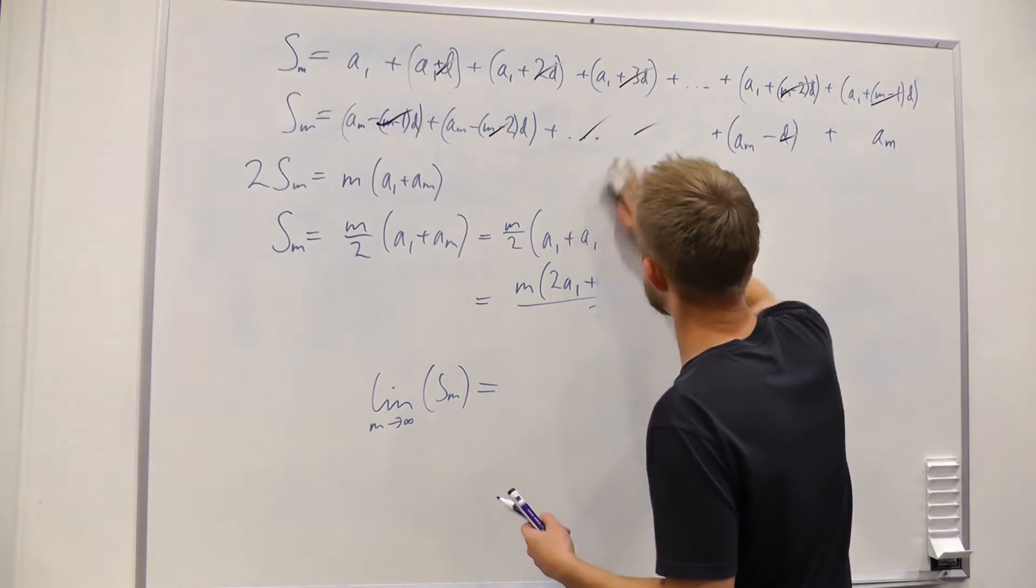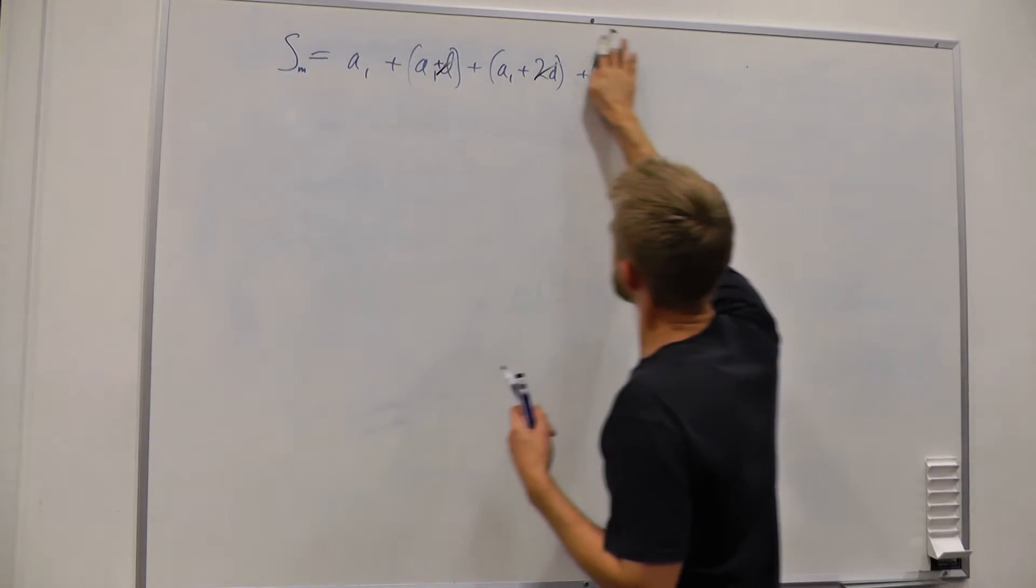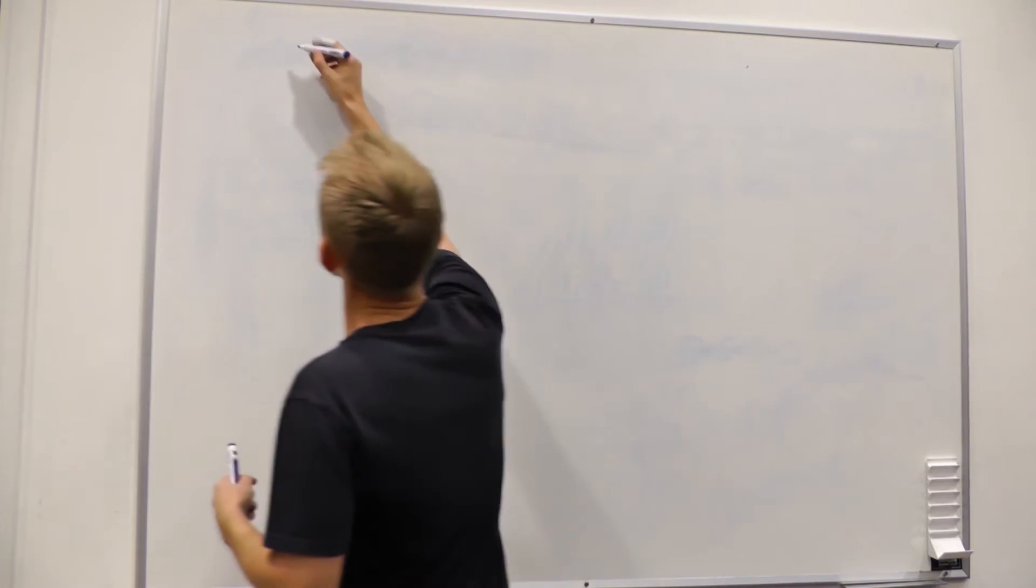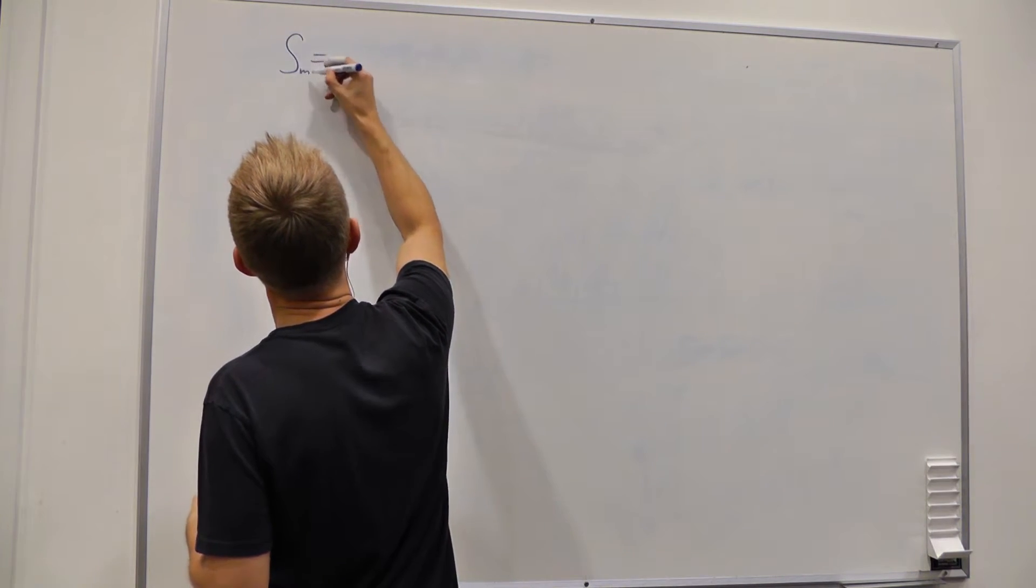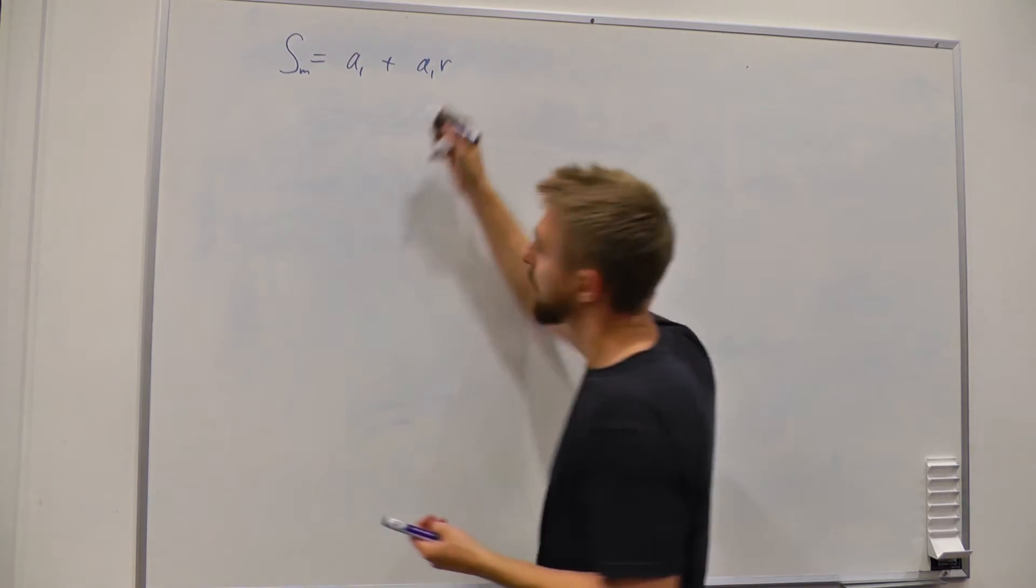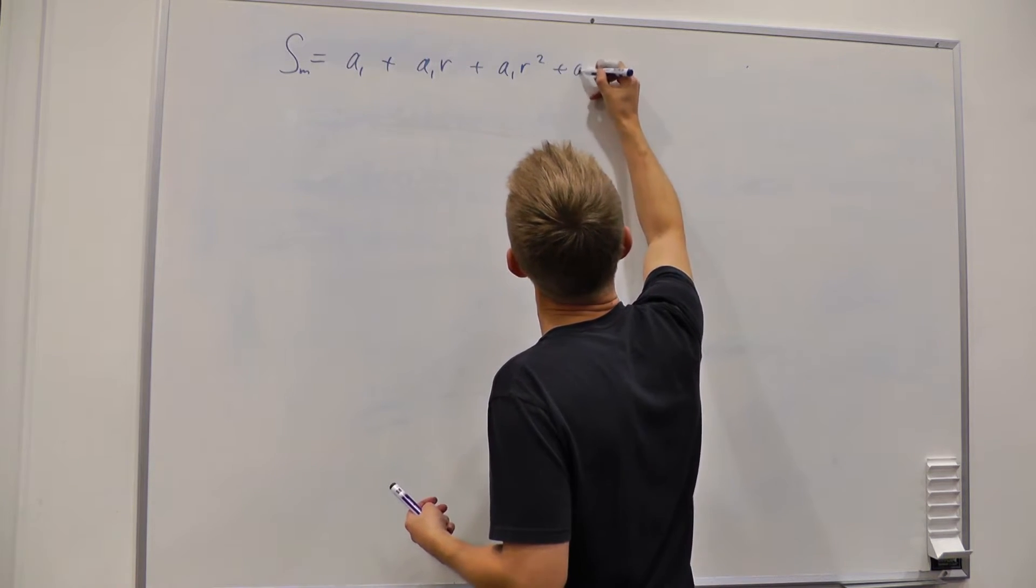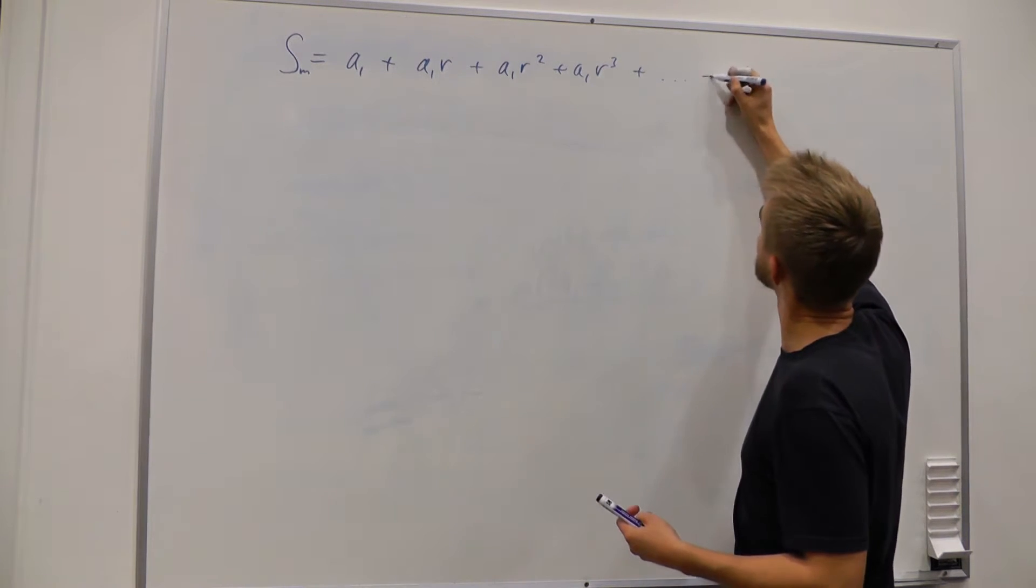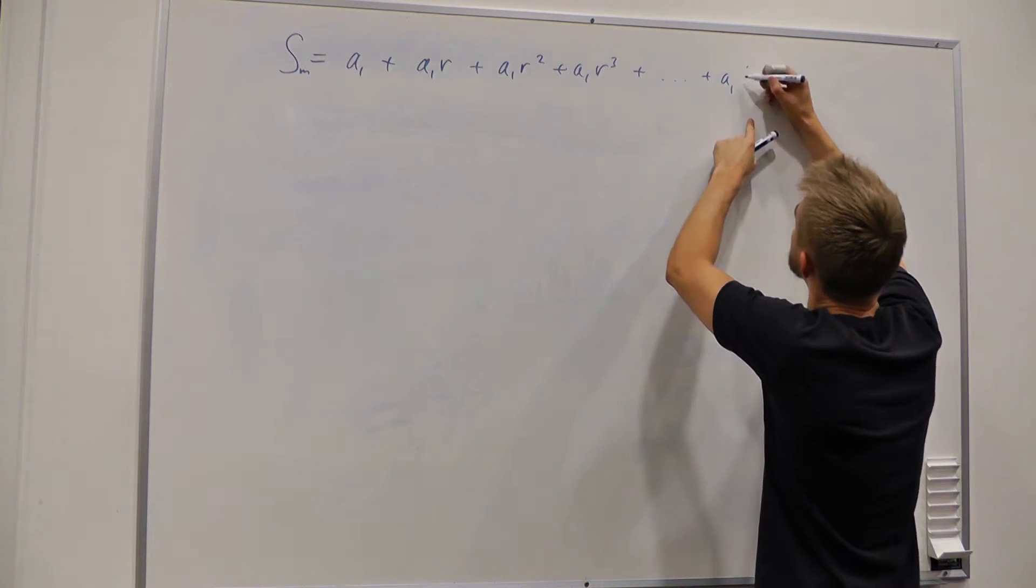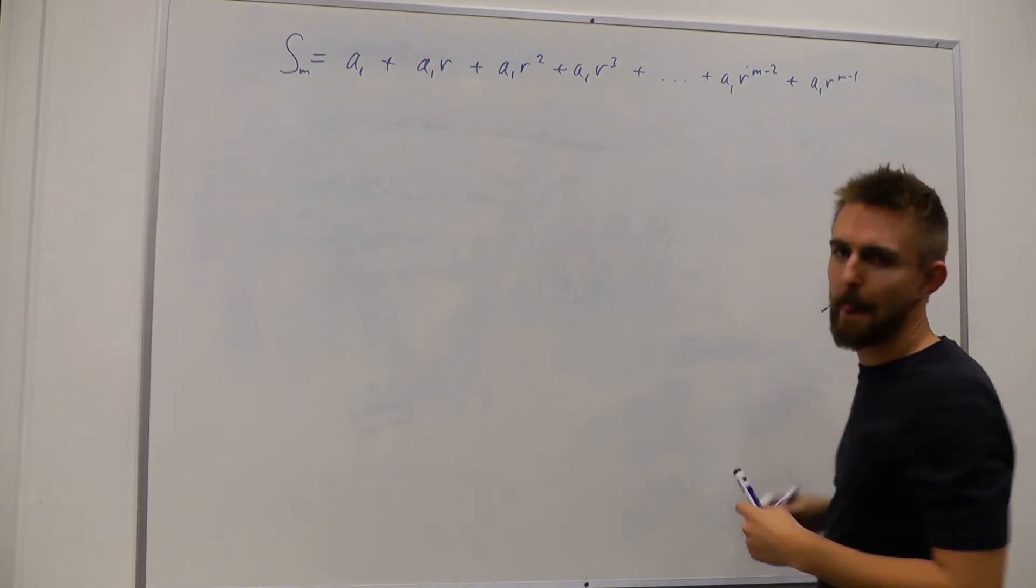The next one we're going to look at is geometric series. So geometric series, very similar, except that rather than adding the same amount each time, we're going to multiply by the same amount each time. So it's got the same common ratio. So our series looks like this. So to m terms we can say, well the first term is going to be a1 again, but the second term this time is going to be a1 multiplied by r, what we call our common ratio. And so the third term can be a1 r squared, a1 r cubed. And then our penultimate term is going to be a1. So the first term's got no r's, the second term's got one r. So our penultimate term is going to have r to the power of m minus 2. And our final term, a1 r to the power of m minus 1.